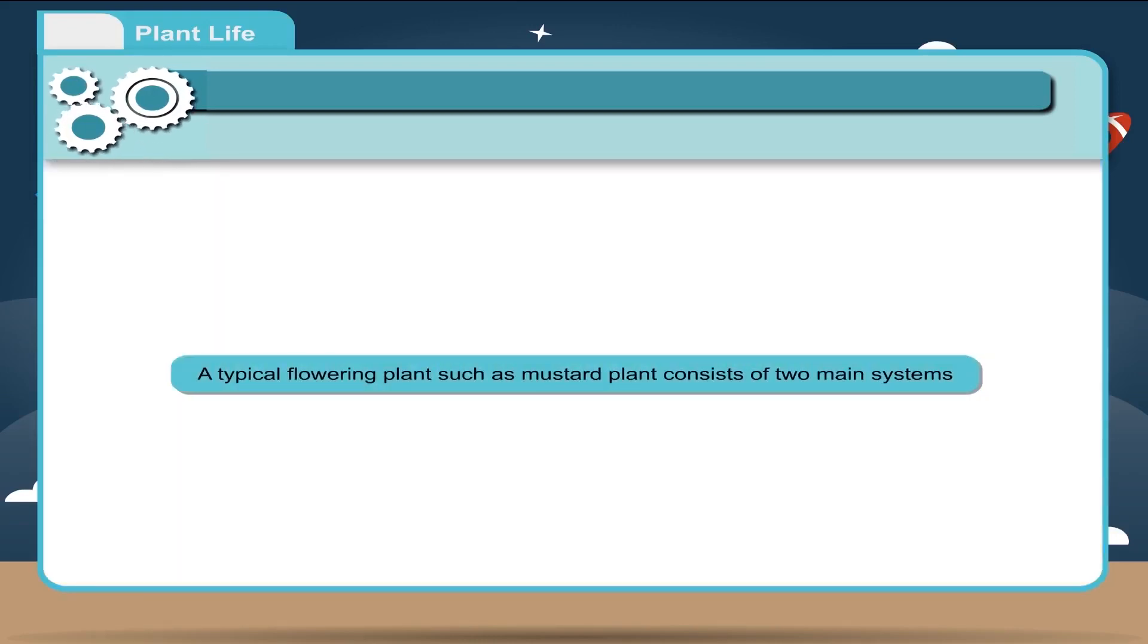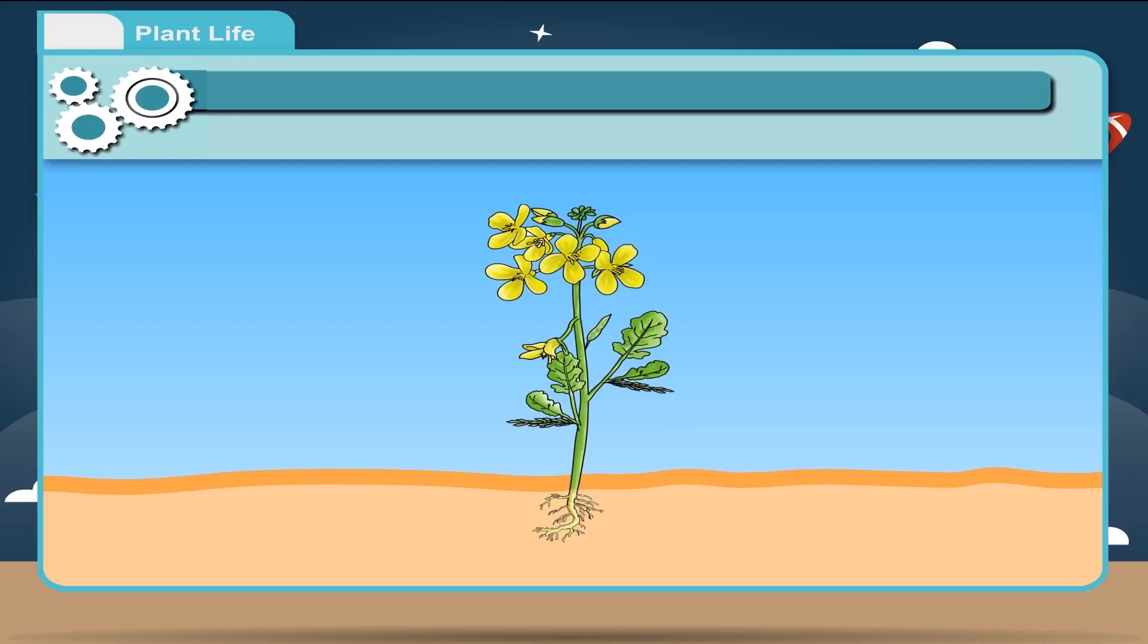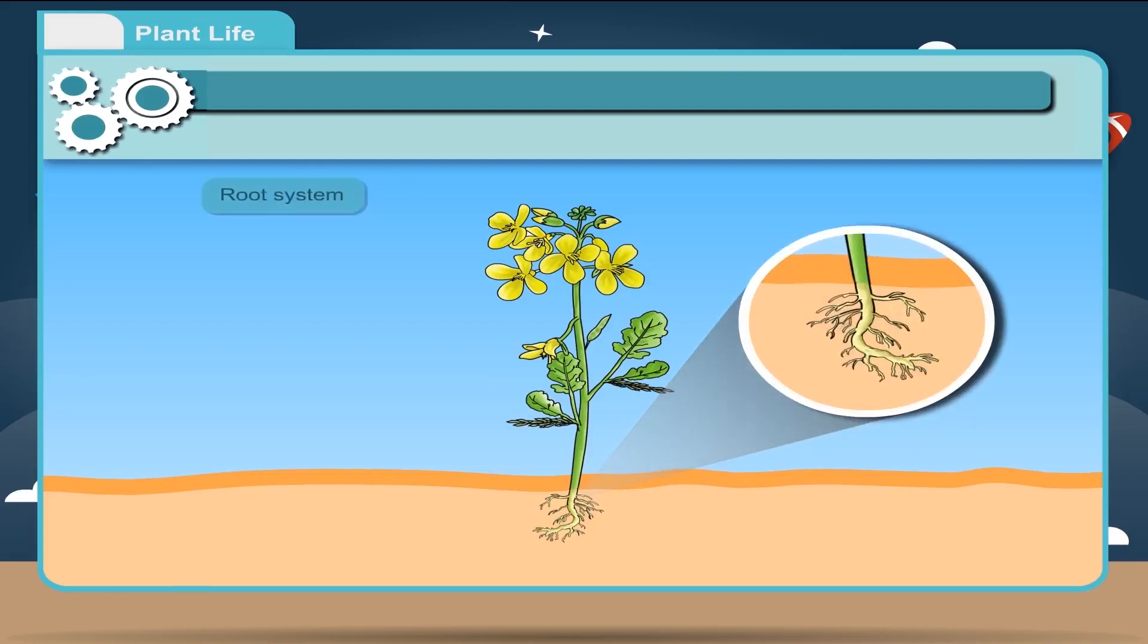A typical flowering plant such as mustard plant consists of two main systems. First, a system below the soil is called the root system and it consists of the main root, secondary root, and root hairs.